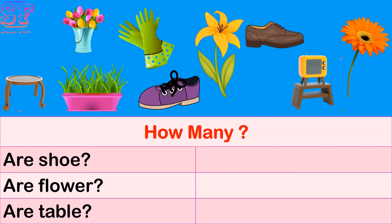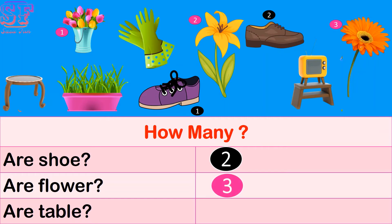Can you see? One, two — two sooths. How many are flowers? One, two, three — three flowers. How many are tables?